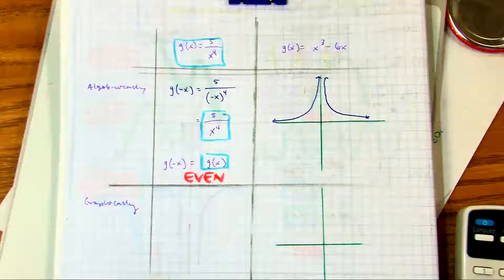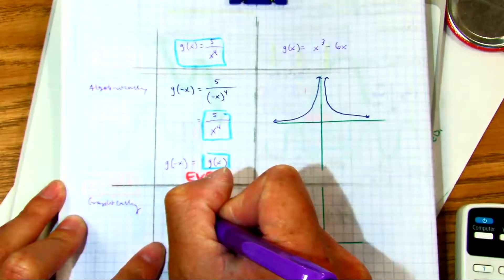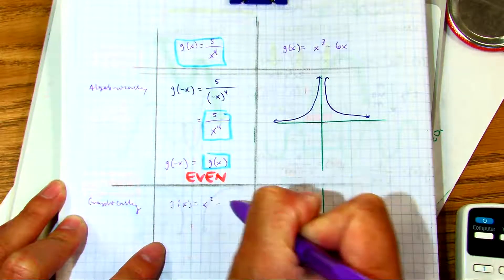I messed up my chart, so I'll just write over here. g of x equals x cubed minus 6x.